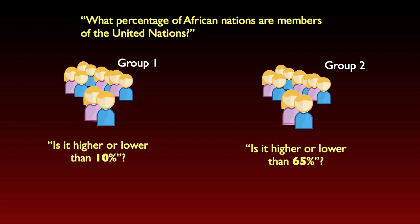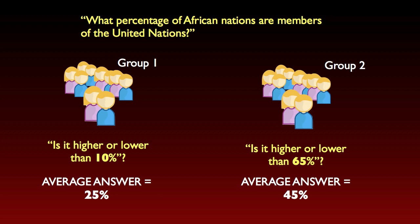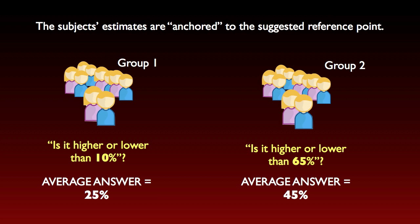Kahneman and Tversky did a famous experiment where they asked subjects to estimate the percentage of countries in Africa that are members of the United Nations. For one group, they asked: is this percentage more or less than 10%? For another group: is it more or less than 65%? The average answers of the two groups differed significantly. The first group's average answer was 25%; the second group's average answer was 45%. The second group estimated higher than the first. Subjects exposed to a higher number had their estimates anchored to that number — give them a higher number, they estimate higher; give them a lower number, they estimate lower.